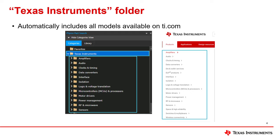The Texas Instruments folder contains all the models available on ti.com. If the user allows, it will automatically update with brand new models along with overriding existing models with newer revisions. The submenu under the folder is organized to mimic the website.